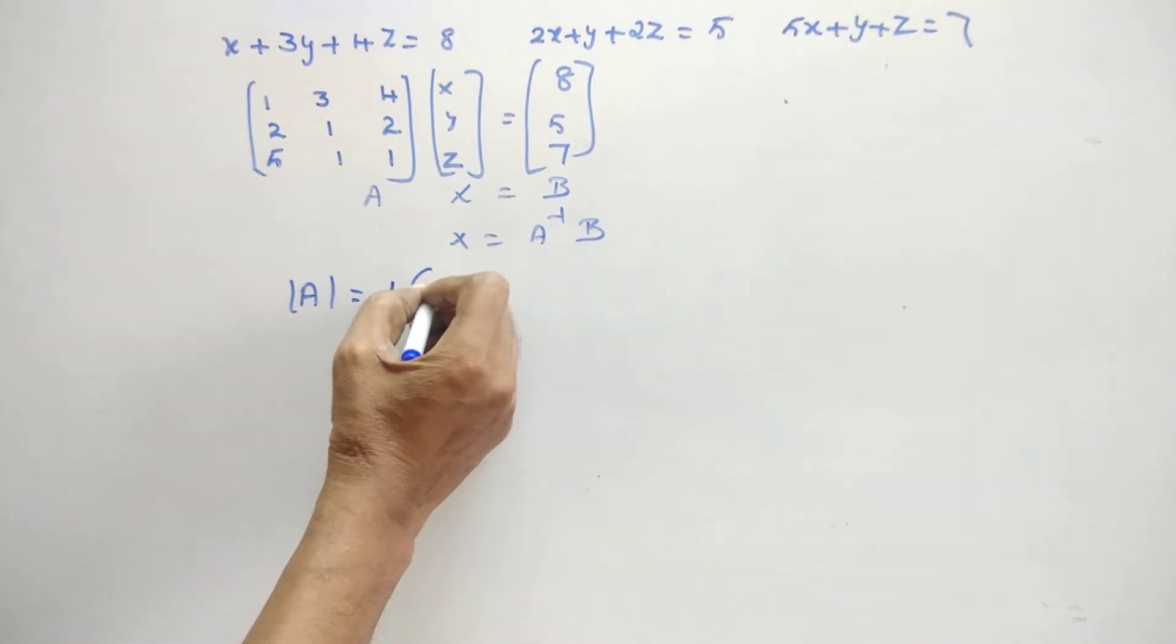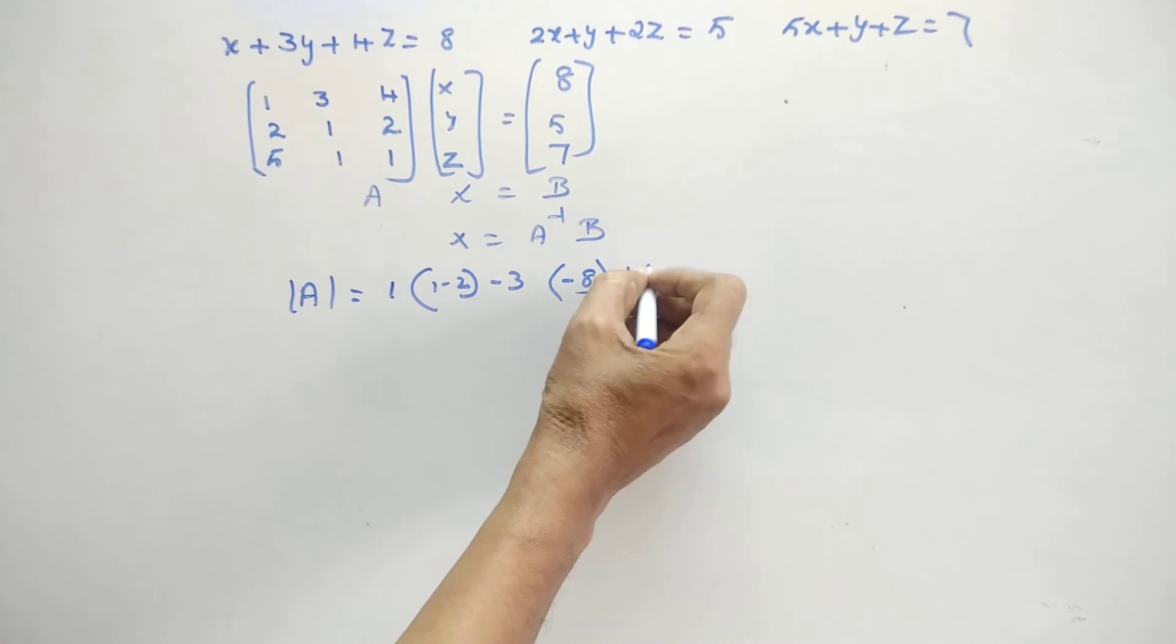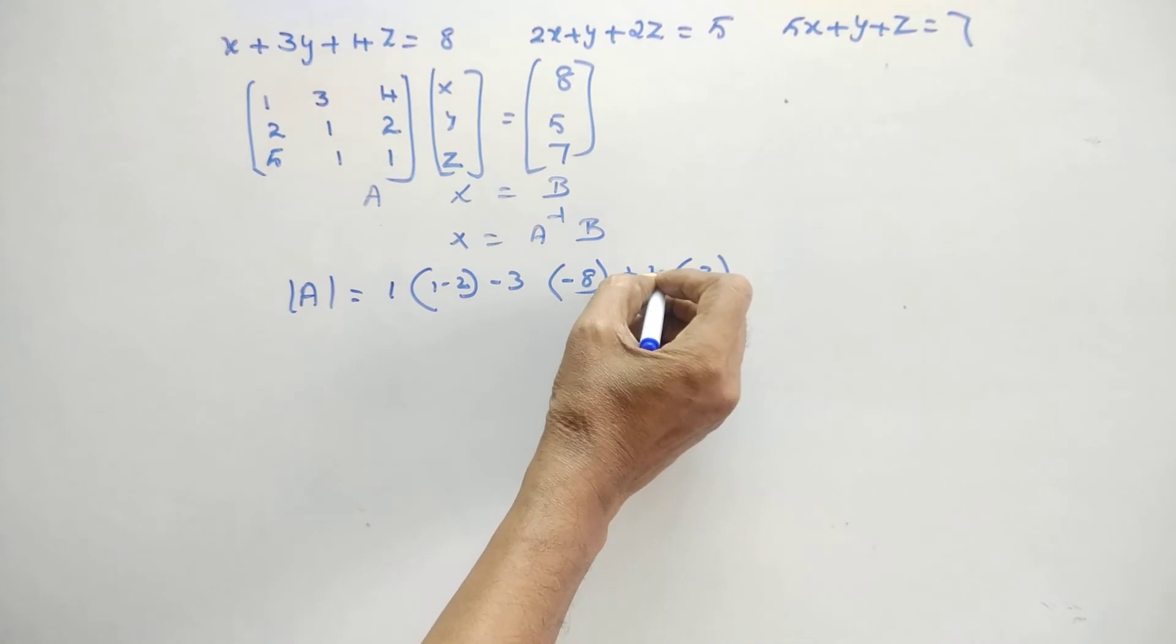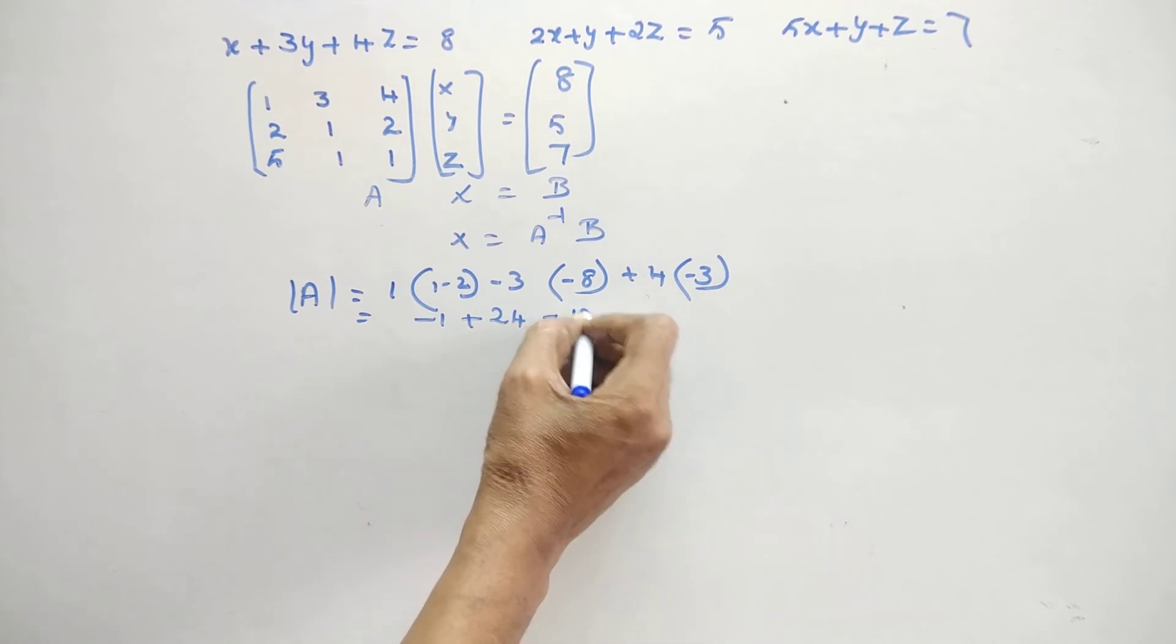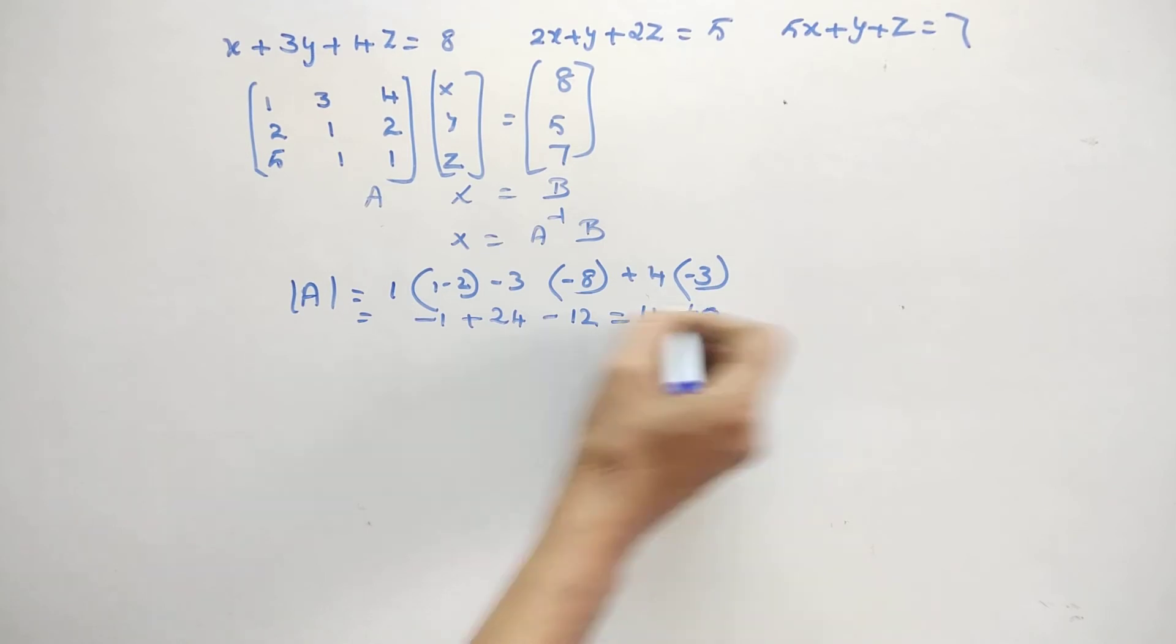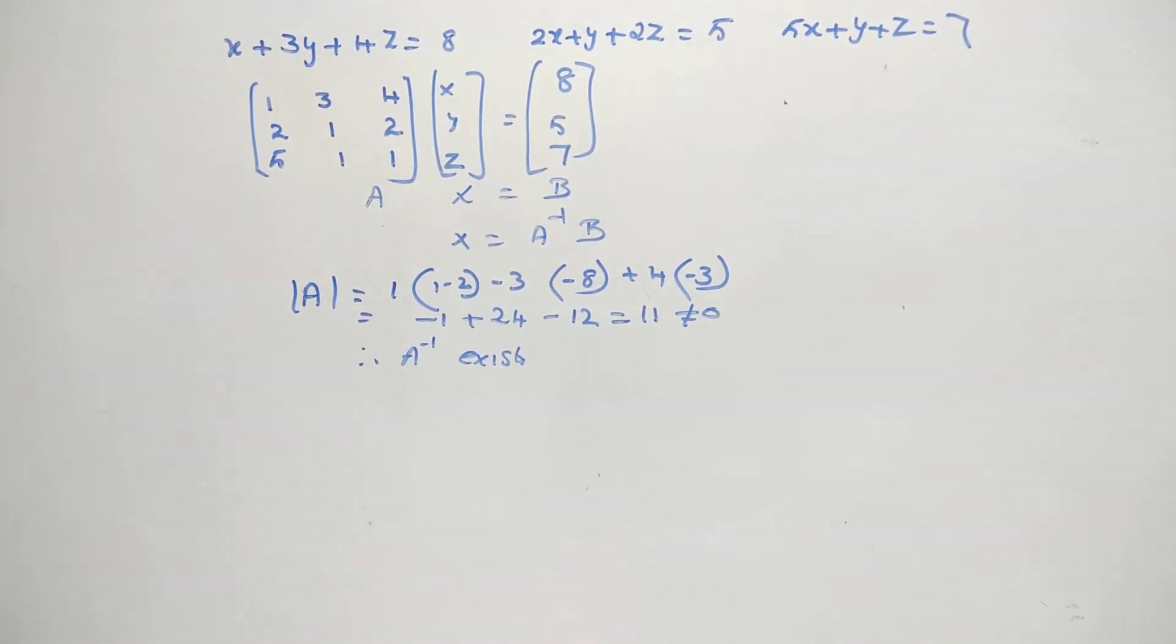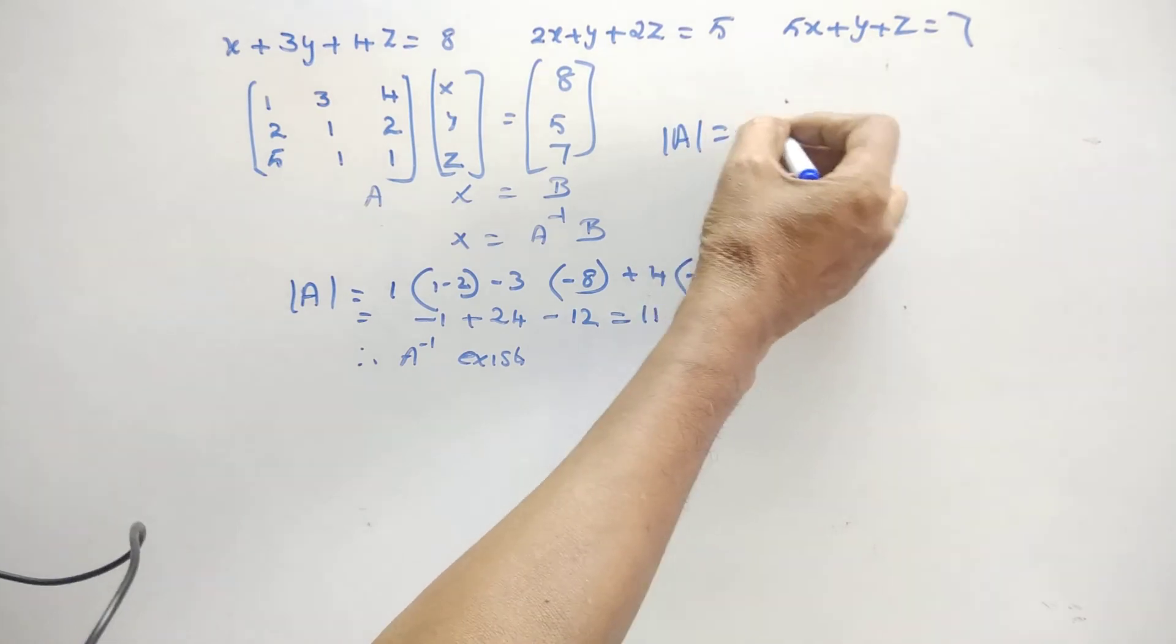So first you have to find A inverse, so before that you have to go for the determinant. I am finding the determinant value. So 1, this is 1 minus 2, and then minus 3, 2 and minus 10, and then 4, 2 and minus 5. So the answer is now minus 1, and this is 24, and minus 12, 24 minus 13. Therefore 11, which is not 0. Therefore, definitely A inverse exists. Now we have to go for that A inverse. That is, you have to find the adjoint matrix. So before that, just let me note down this value: determinant of A equal to 11.